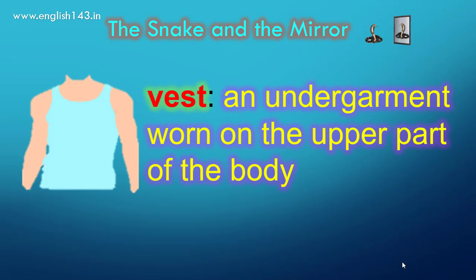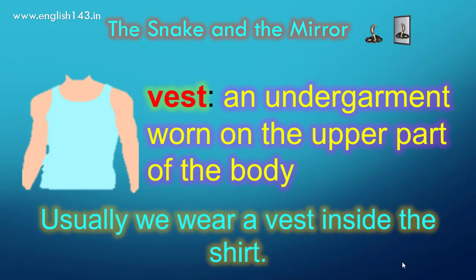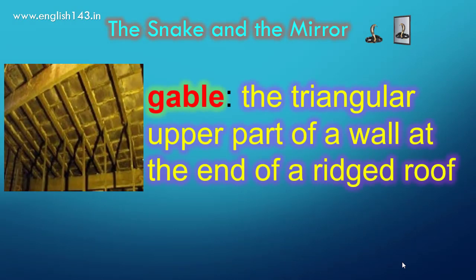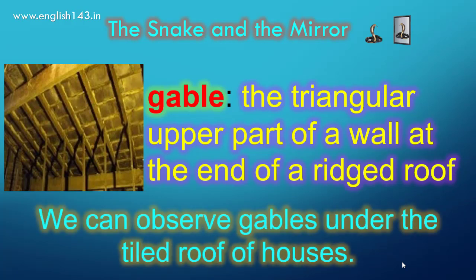Vest is an undergarment worn on the upper part of the body. Usually we wear a vest inside the shirt. Gable is the triangular upper part of a wall at the end of a ridged roof. We can observe gables under the tiled roof of houses.